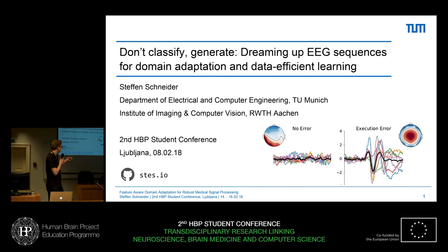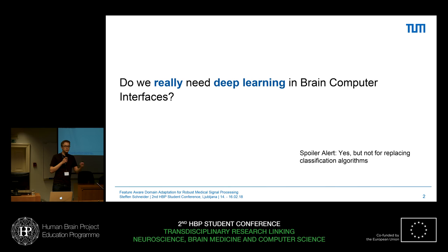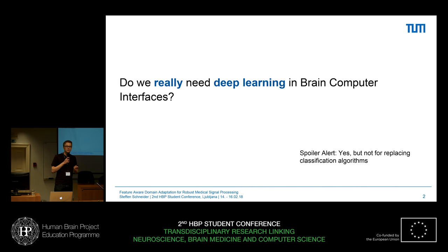What I'm mainly interested in is the discrimination between error-related potentials, which is quite useful in spelling devices and other kinds of EEG-based brain-computer interfaces. With the rise of deep learning, people applied deep nets as the discriminative model in brain-computer interfaces, and the question I asked myself is whether deep neural networks are actually the right tool to use in discriminative tasks in neuroscience — basically to replace classification algorithms.